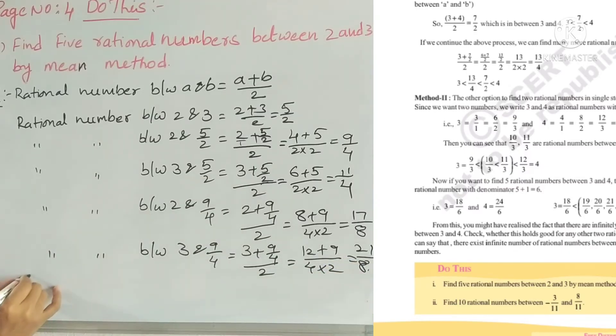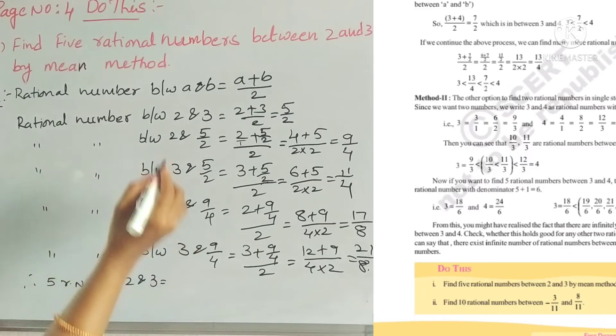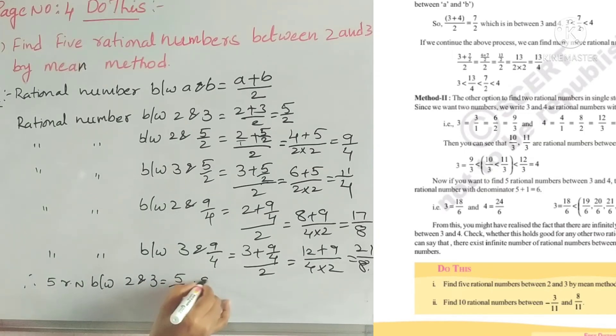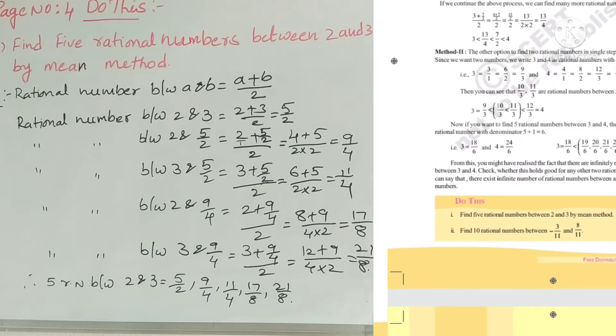That's (4 times 3 is 12, plus 9) divided by (4 times 2), equals 21 by 8. So we've calculated 5 numbers. The 5 rational numbers between 2 and 3 are 9 by 4, 5 by 2, 11 by 4, 17 by 8, and 21 by 8. In this way, by using the mean method, we can calculate rational numbers between any two rational numbers.